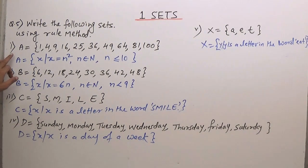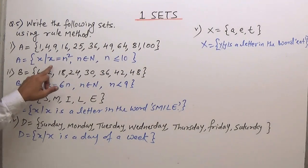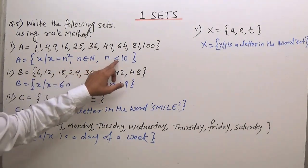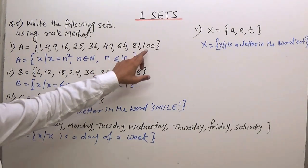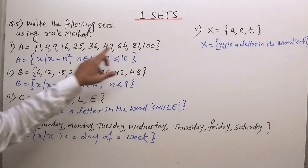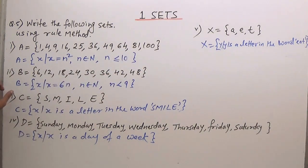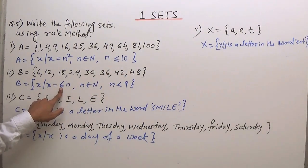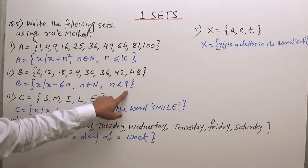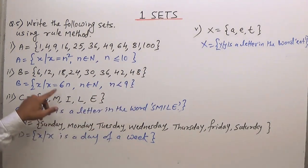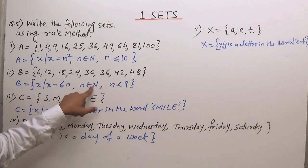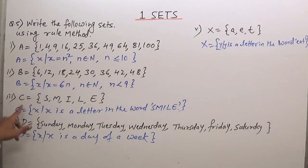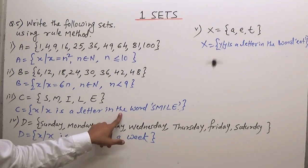Looking at question number 5 summary: here we have squares of numbers, written as n², where n belongs to natural numbers and n ≤ 10, since the last number is 10². For the multiple of 6: set B = {x | x = 6n, n ∈ ℕ, n < 9}. If it were multiples of 5, you'd write 5n; if multiples of 4, write 4n. For the smile word: x is a letter in the word 'smile.'